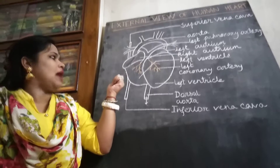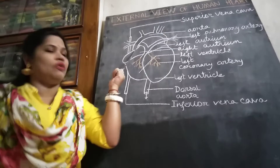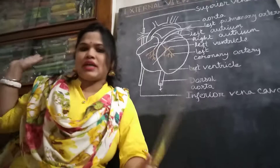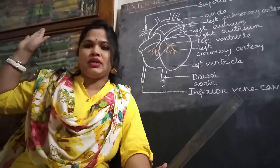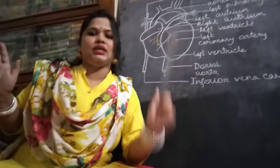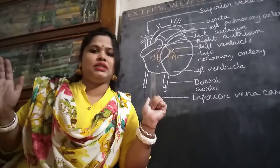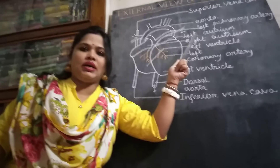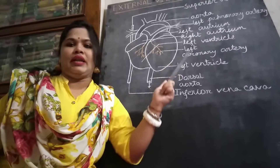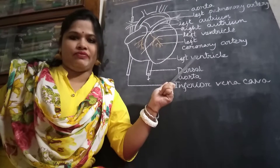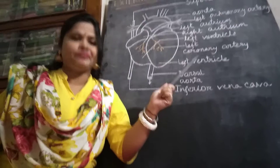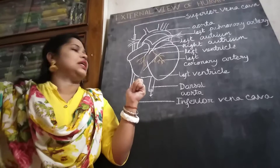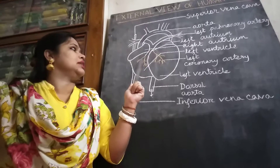This is the right atrium on my right side, and just below it is the right ventricle, as you can see on the board. On the left side is the left atrium, and below it the left ventricle.